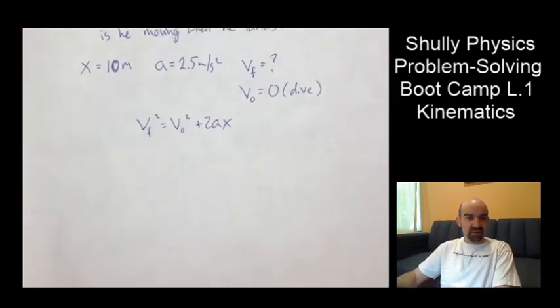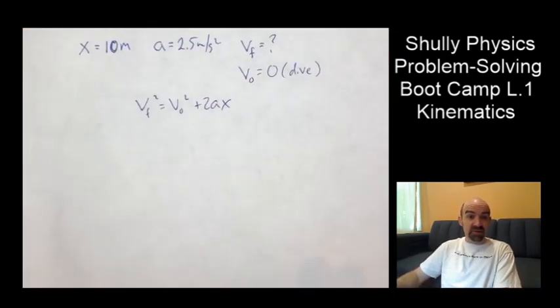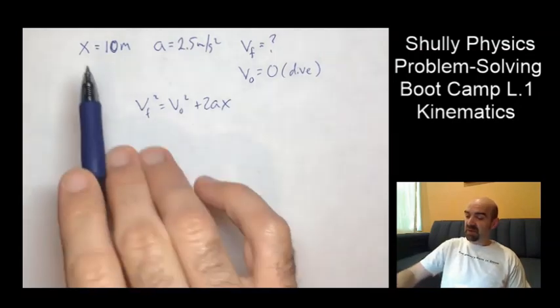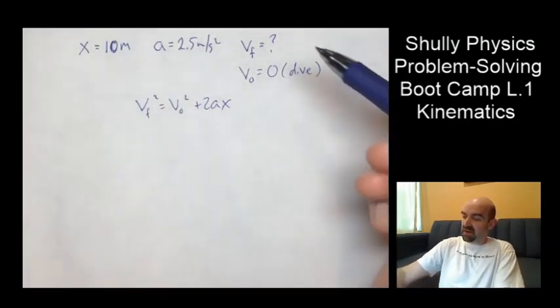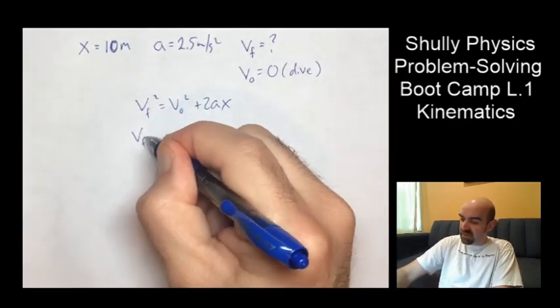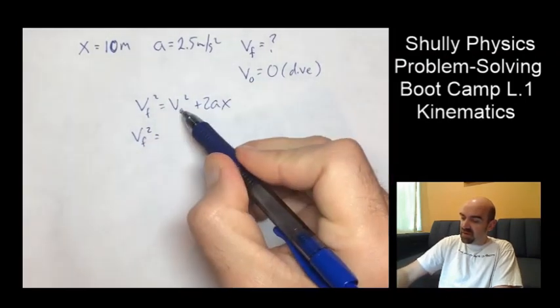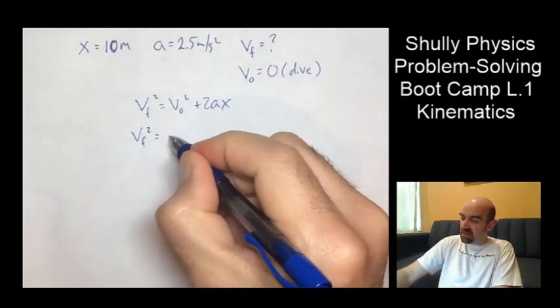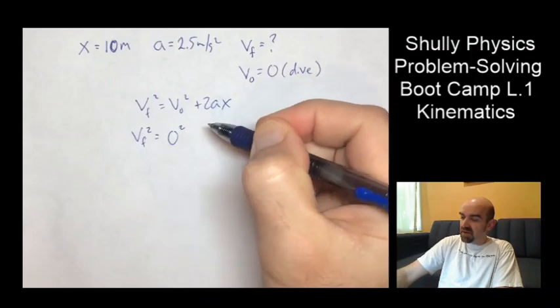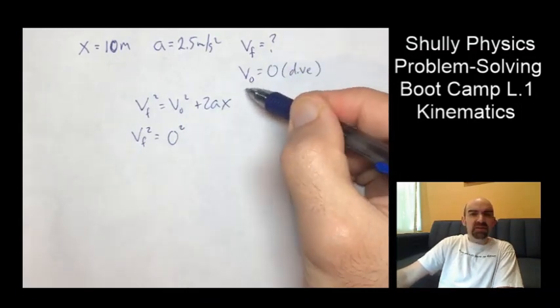All right. And now, look at this. I don't need the words anymore. I've got everything laid out. That's why I want you to label them. And now all it is is a matter of filling in the knowns. Initial velocity is zero. And this is where it was.